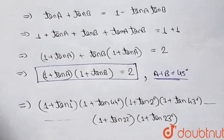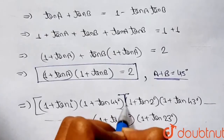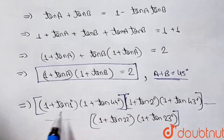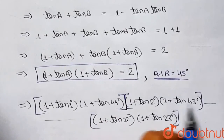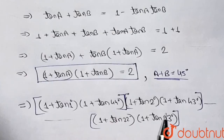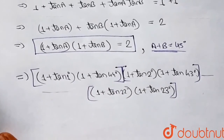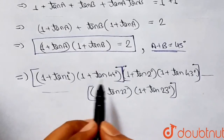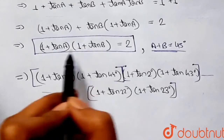If we take terms in pairs, we can see that 1 + 44 = 45, and 2 + 43 = 45, and 23 + 22 = 45. So if we make pairs of two, the sum of angles in each pair becomes 45°, and we can apply our result.